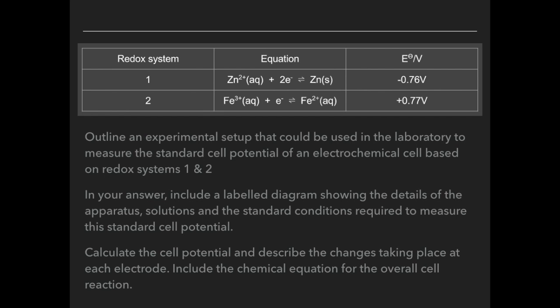We'll use this question to cover those two skills. We've got a table with two redox systems and we need to outline an experimental setup that could be used in the lab to measure the standard cell potential of the electrochemical cell based on those two redox systems in the table.